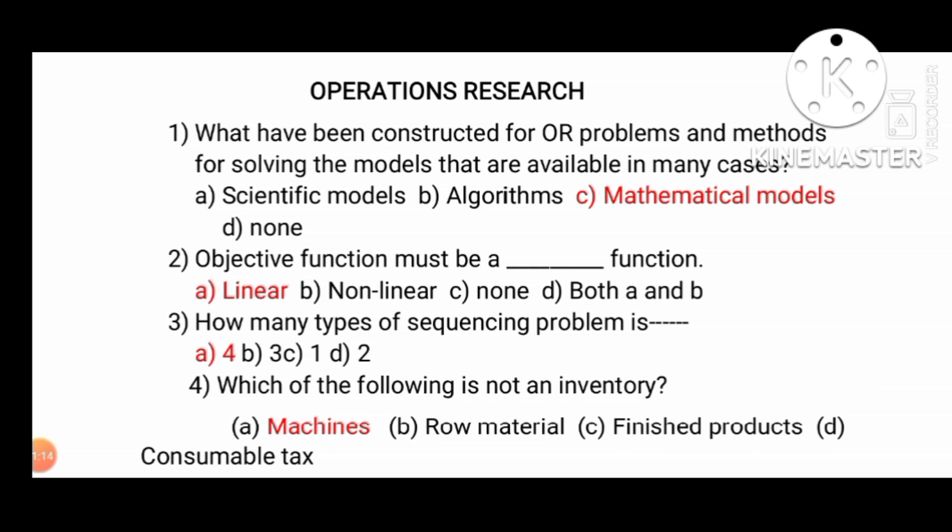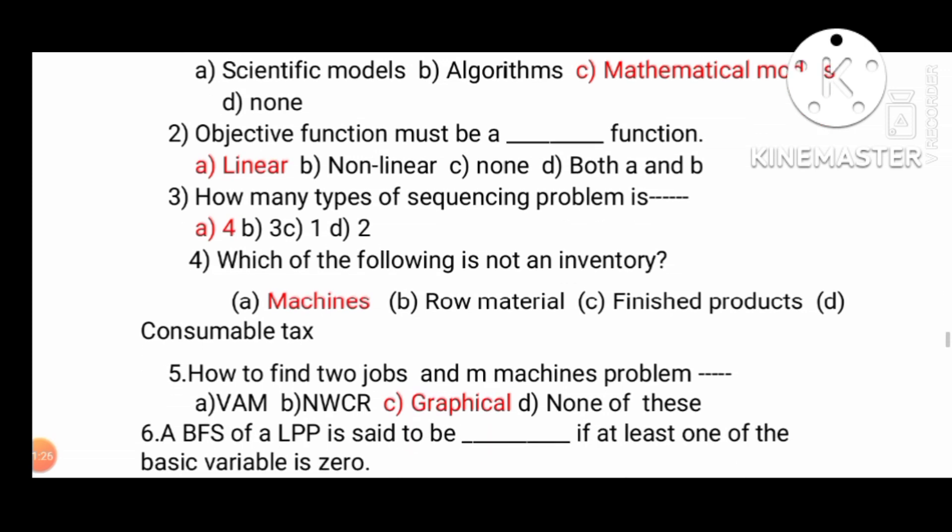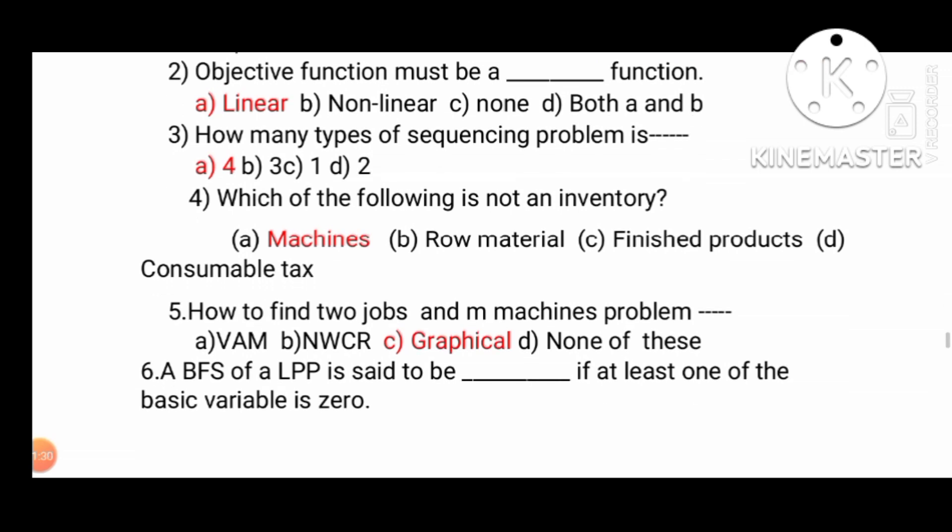The first question: What have been constructed for OR problems and methods for solving models available in many cases? Mathematical models. Objective function must be a dash function - Linear function. How many types of sequencing problem? Four. Which of the following is not inventory? This is a very important question. This is last year's TN-based question.